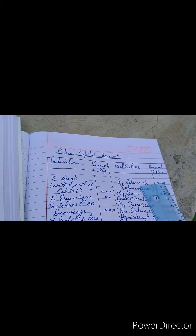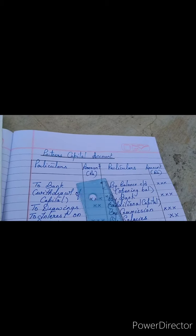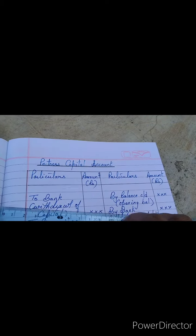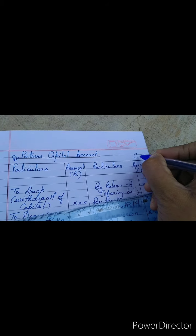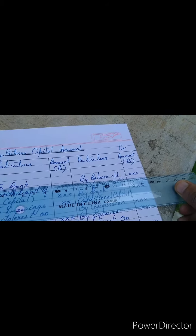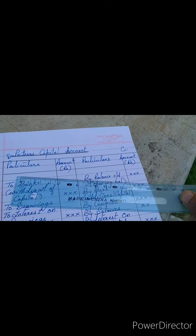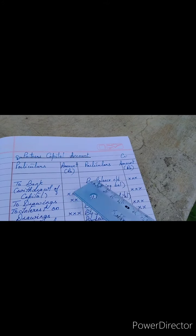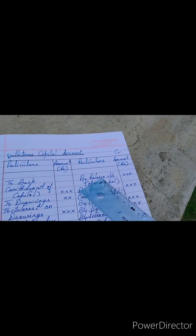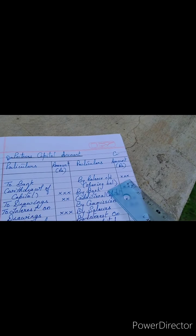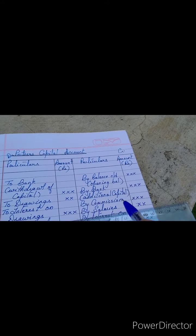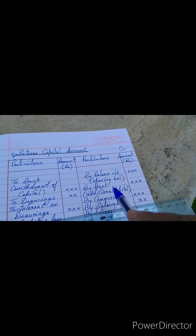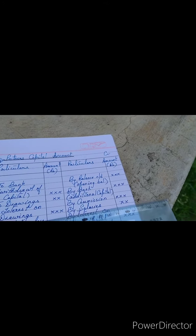Your partner's capital account will look like this. Have a look at the format — debit side and credit side. Debit side: you have particulars and amounts. Credit side also: you have particulars and amount. Let us see the credit side first. We have opening balance carried down. This account is prepared for that particular financial year, so the previous year's balance — how much amount of the partner is still in the company — that balance will be recorded here. After that, by bank account, in case any additional capital is put by the partner, that has to be shown. So the credit side shows all amounts which have to go to the partner.